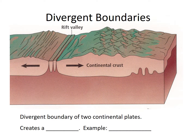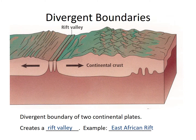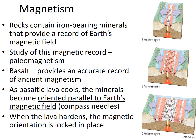This rift valley is a divergent boundary. The divergent boundary of two continental plates creates a rift valley, and an example is the East African Rift Valley. So how do we know that these rift valleys exist? That has to do with magnetism. Rocks containing iron minerals provide a record of the Earth's magnetic field, which is changing. The study of this magnetic record is called paleomagnetism.